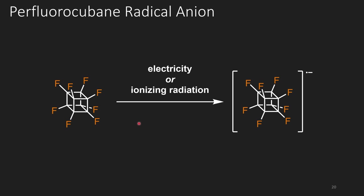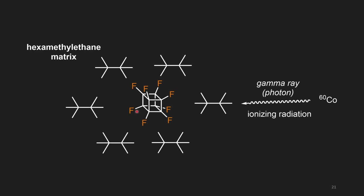Earlier I mentioned they were able to trap an electron in perfluorocubane, reducing it to a radical anion species. They did this two ways. The first was utilizing electricity in cyclic voltammetry. However, the reduction was irreversible — once the radical anion formed it led to decomposition, and they weren't able to reoxidize it back to perfluorocubane. So to prove they were actually forming the radical anion, they utilized ionizing radiation in an interesting technique.